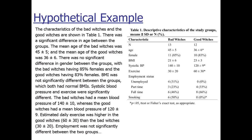The author then goes line by line: 'There was a significant difference in age between the groups. The mean age of the bad witches was 45, and the mean age of the good witches was 36. There was no significant difference in gender, with bad witches having 85% females and good witches 83%. BMI was not significantly different. Systolic blood pressure and exercise were significantly different.' The author is literally just reading the table — you've got to give your reader more credit. Give a higher-level summary, not a table read-through.